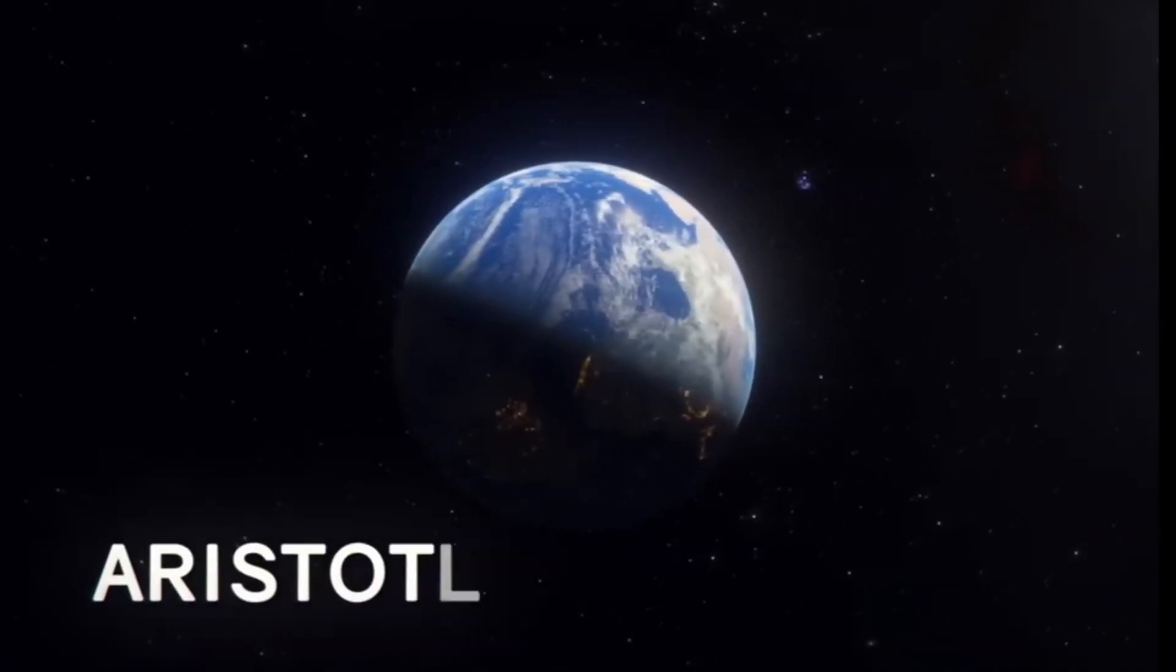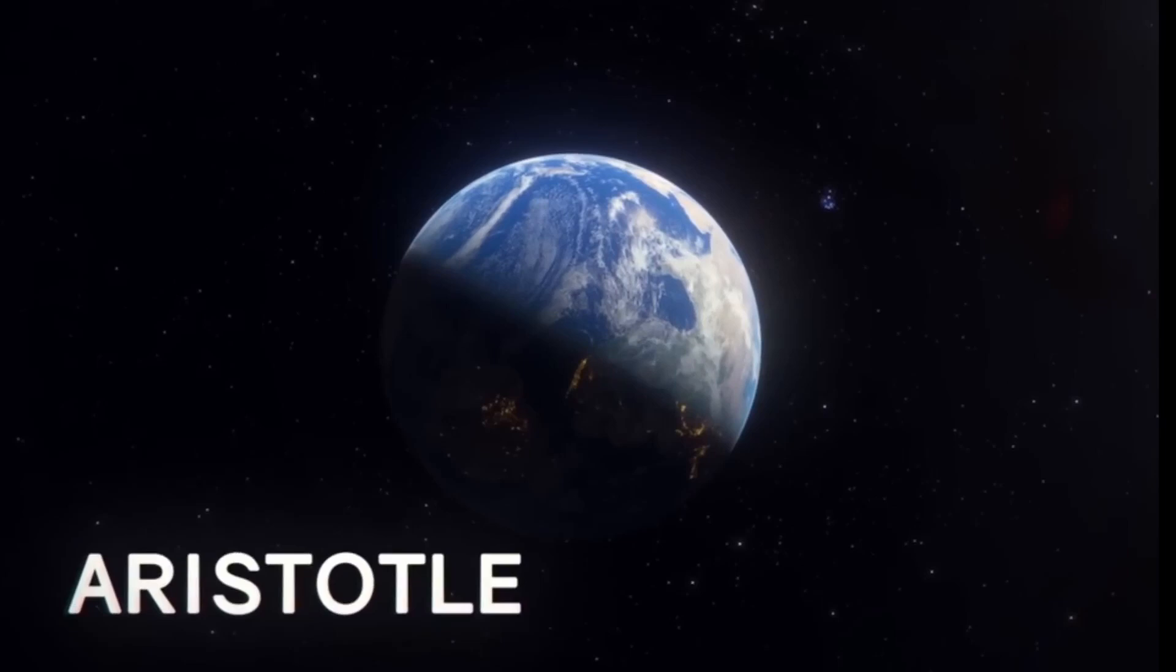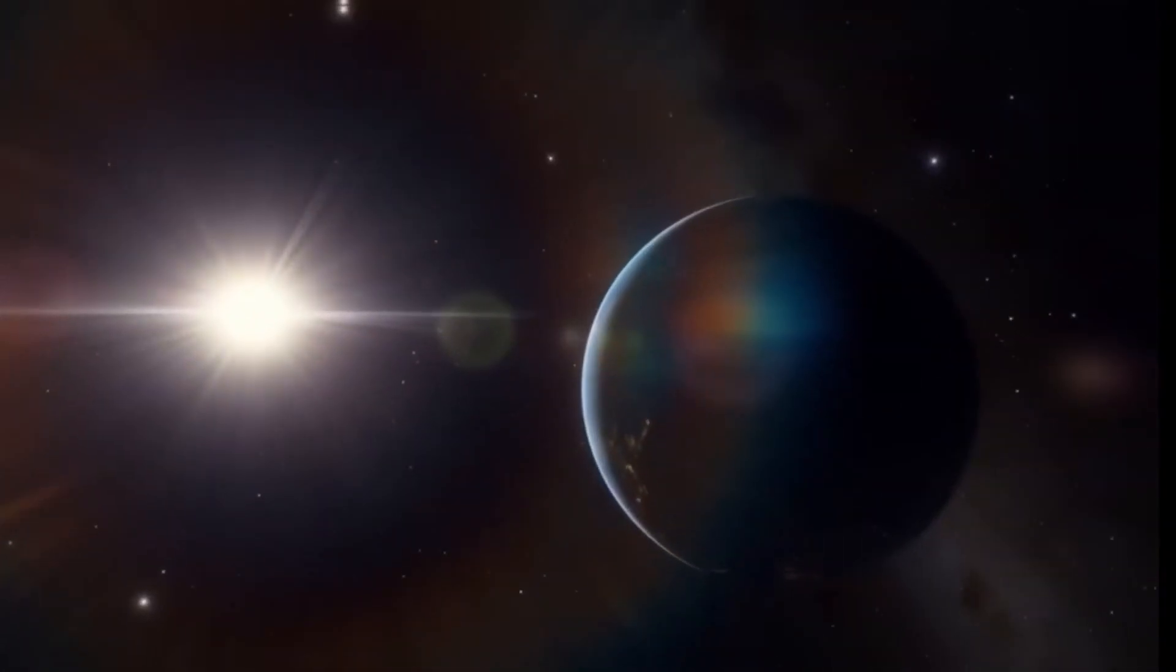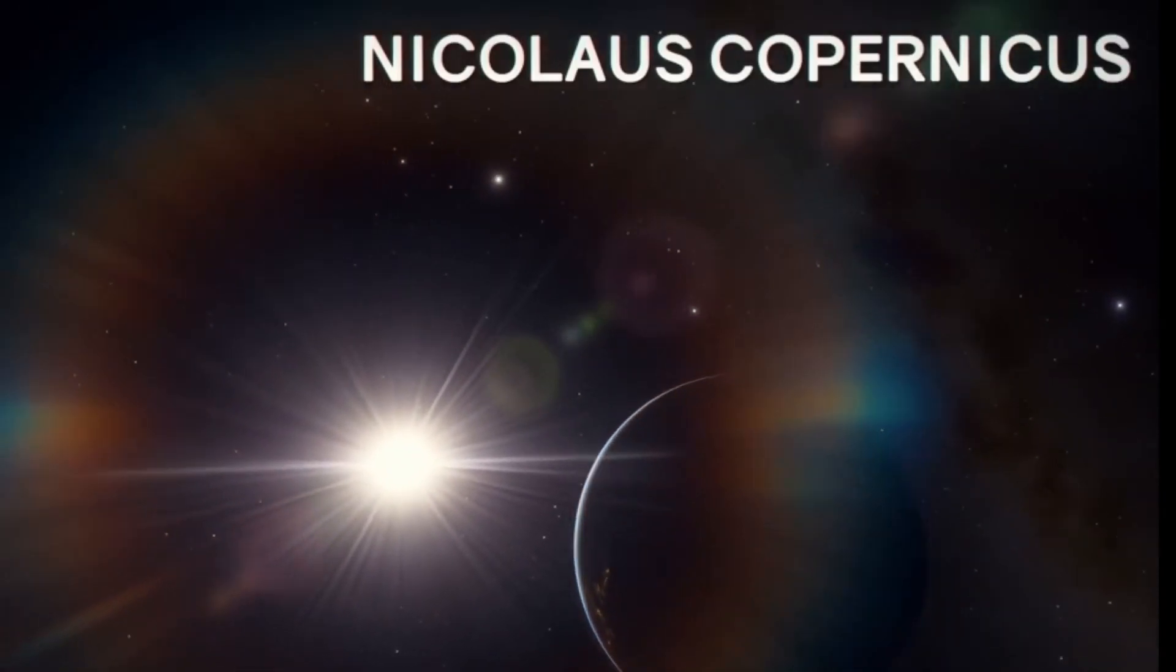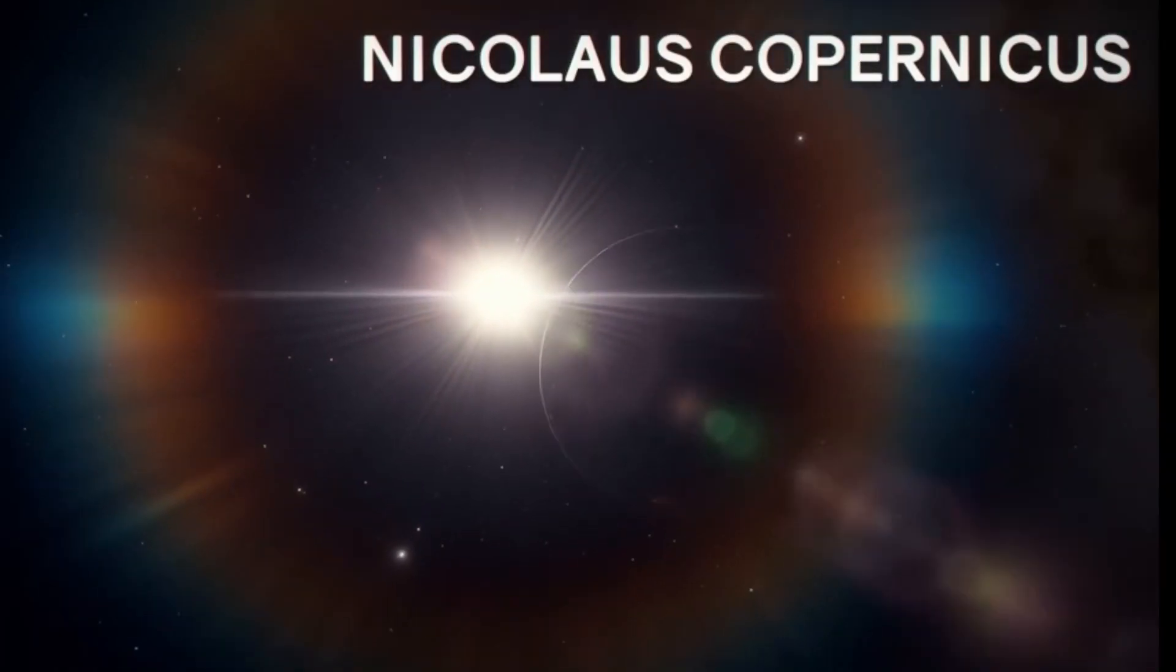Later, the ancient Greek philosopher Aristotle came to the conclusion that the planets and even the sun revolve around Earth. And in the 16th century, Nicholas Copernicus was convinced the Earth itself revolved around the sun, which was thought to be the center of the universe.